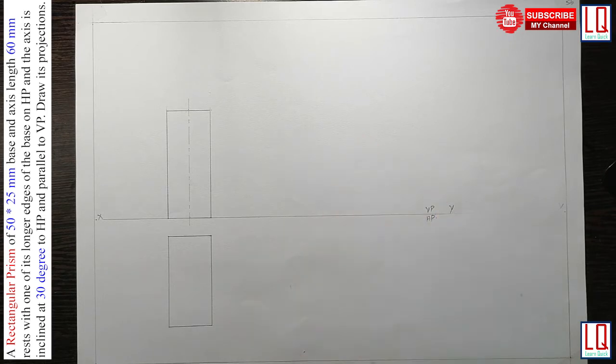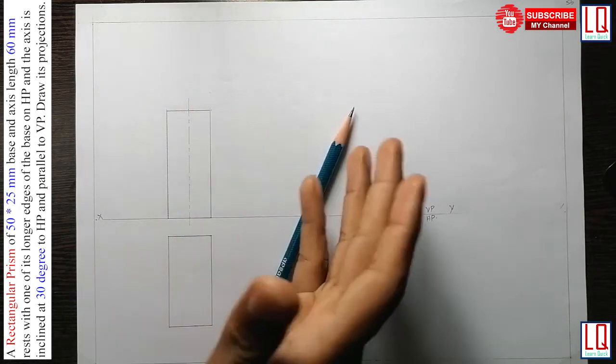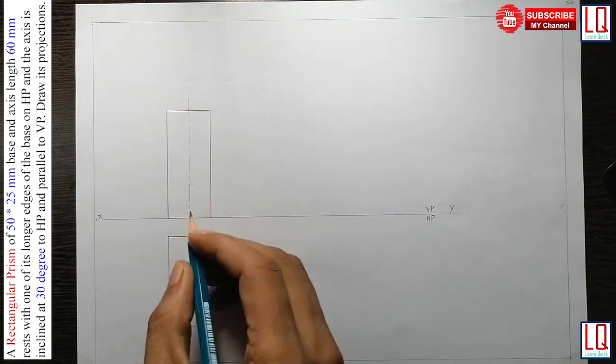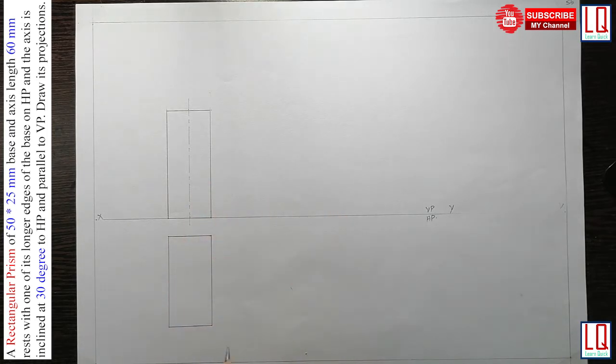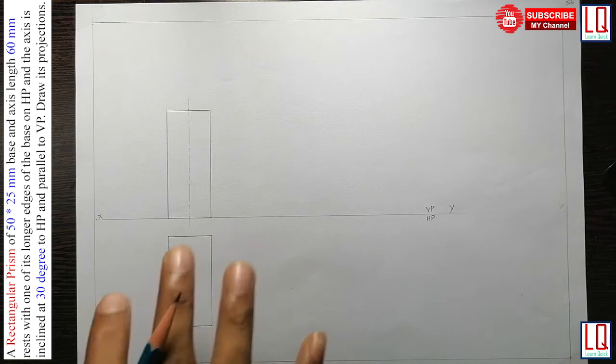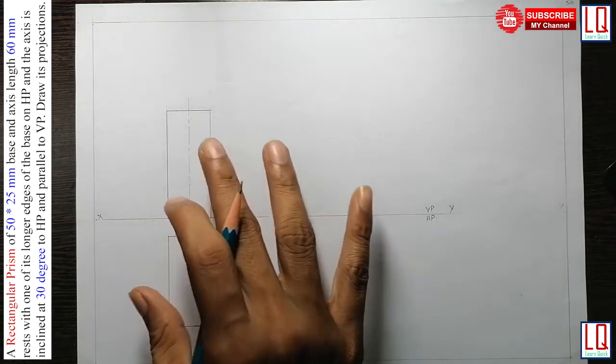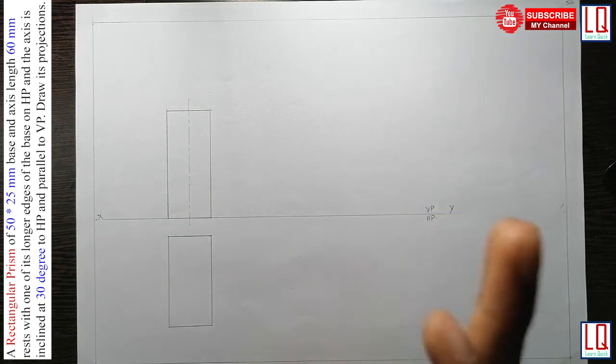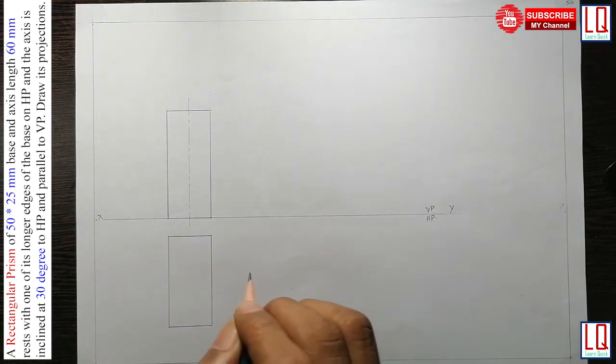So when this axis is inclined at 30 degree to HP, so the entire rectangular prism is going to be inclined. So whether you keep 30 degree to this axis or to the side is same. So here I have drawn the step 1 and step 2 already and this is the default position. So now we will directly name it. So to understand this default position, you have to refer our previous video lecture projection of solids.